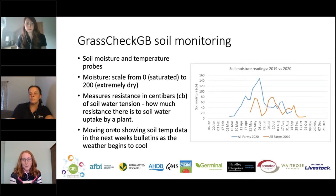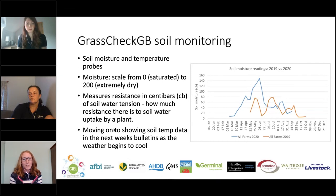You can see on the graph just how dry this summer was compared to last year. The orange line shows soil moisture readings through 2019 as weekly averages across all our farms, and the blue line shows 2020 figures. That really high number shows very dry soils on average across the whole country for the week of 25th May and beginning of June. The soil data on moisture and temperature is obviously something farmers can't control, but soil health and soil nutrient status is something where there are many practical steps that can be taken.